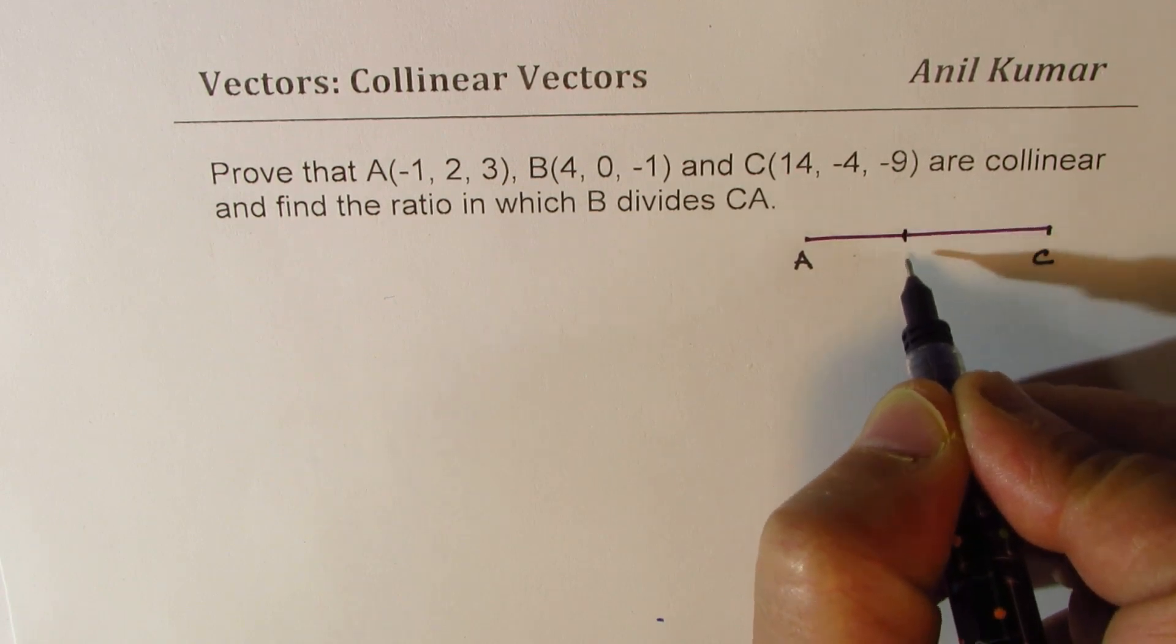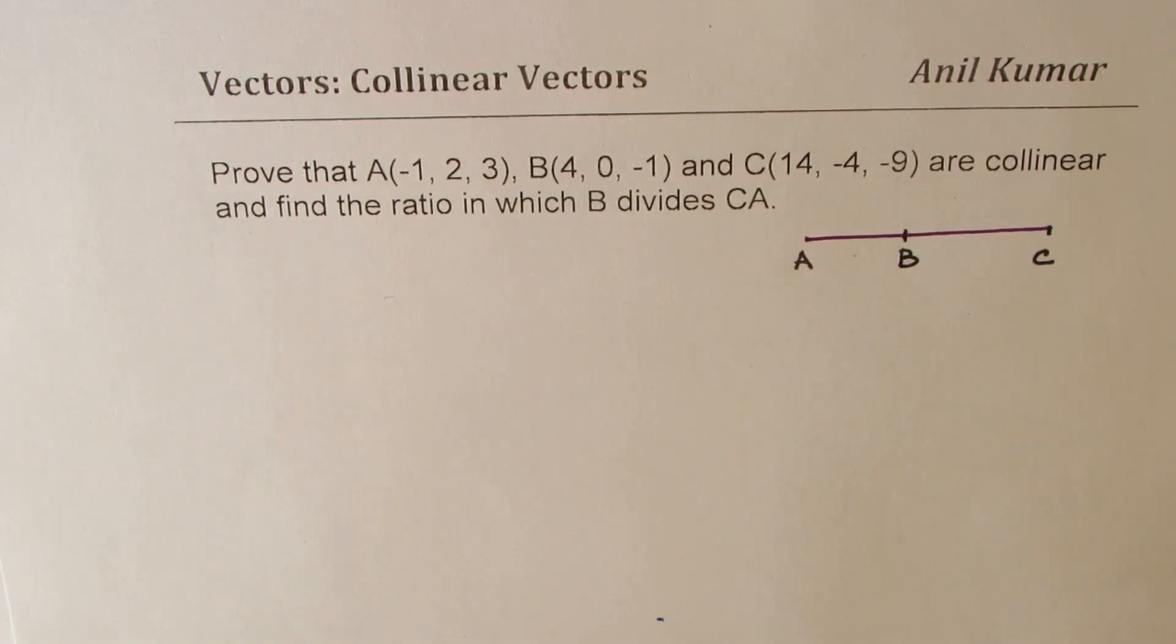That is to say that if this is A and that is C, then B could be somewhere in between. Then it means they are collinear.